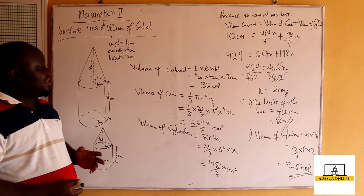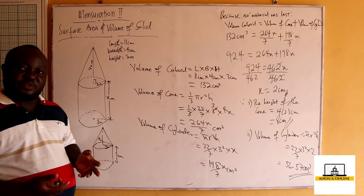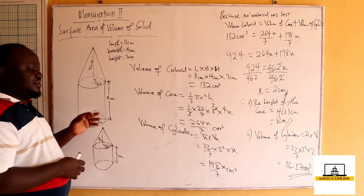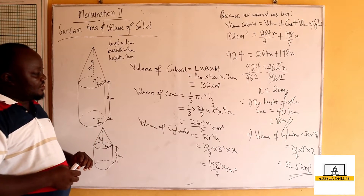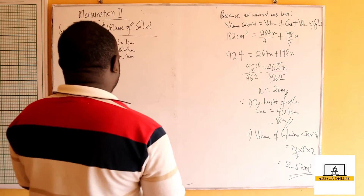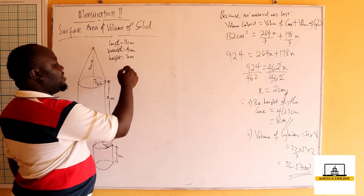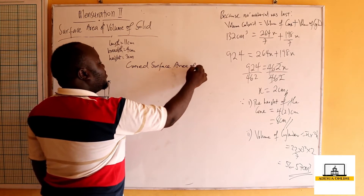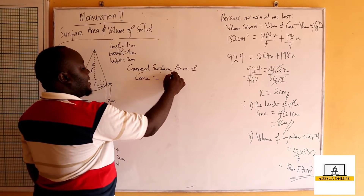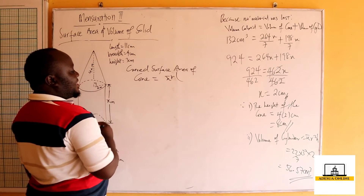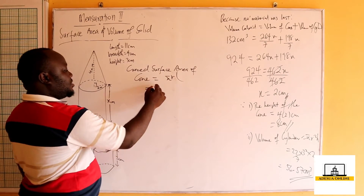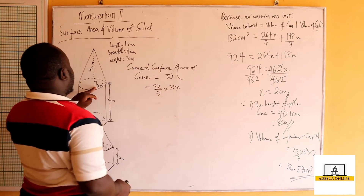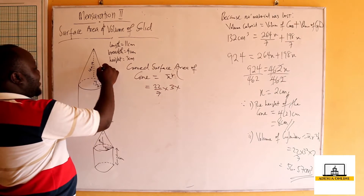For part c, the total surface area of the new solid is the curved surface area of the cone added to the total surface area of the cylinder. The curved surface area of the cone is pi r l, which gives us 22 over 7 times 3 times the slant height l. We need to find the value of l first.